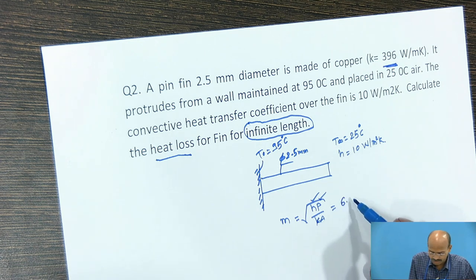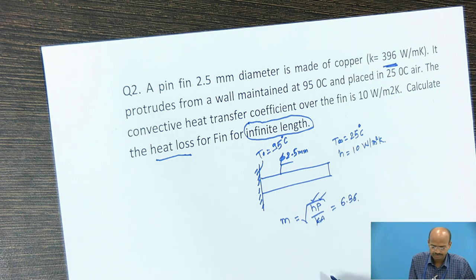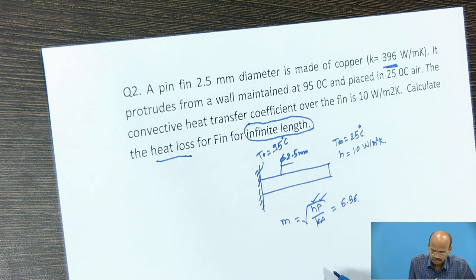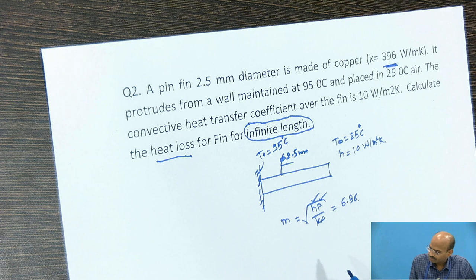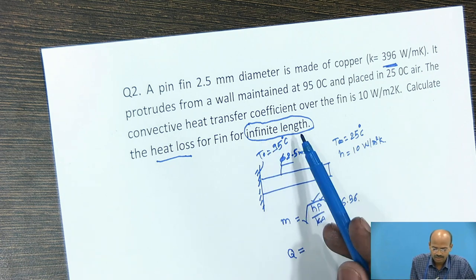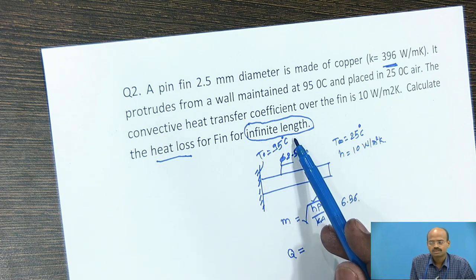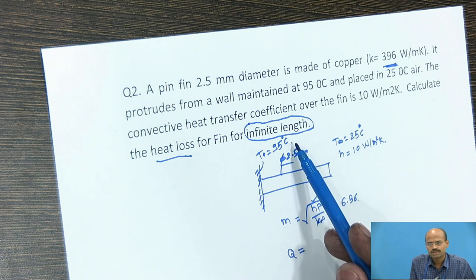We will obtain M as 6.36. Then as we know, the rate of heat conduction through the infinite length fin, in last session we have derived the equation.